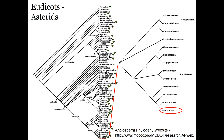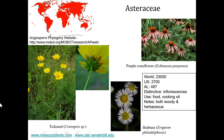Now we're going to skip down to the Asteraceae, which will be our final family. In the world there are approximately 23,000 species of Asteraceae; in the US there are 2,700; in Alabama there are 487. There are more Asteraceae species than any other family except for orchids — they are a highly, highly diverse and successful group.